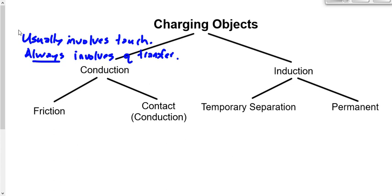Conduction breaks down into subcategories. Charging by friction involves rubbing two things together, and it's governed by the law of conservation of charge. If you have two neutral objects and rub them together and one becomes minus four, the other becomes plus four — neutral and neutral gives zero, negative four and positive four gives zero. The total charge must remain the same.